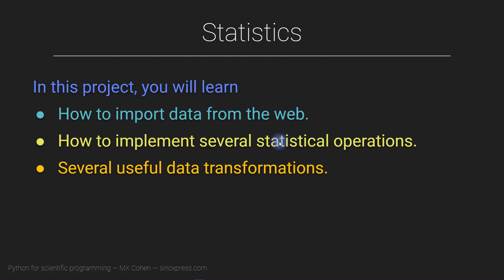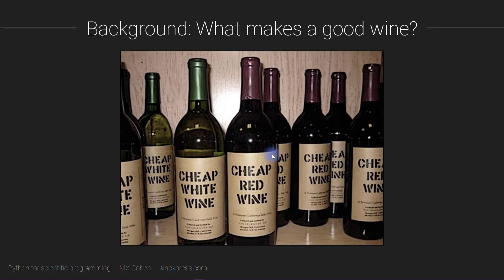The particular questions we're going to be asking in this project are all about wine. You probably have some wines that you prefer and some that you try and just don't really like. So what makes a good wine? We all know that wine preferences are subjective — some people like certain wines and other people like different wines.